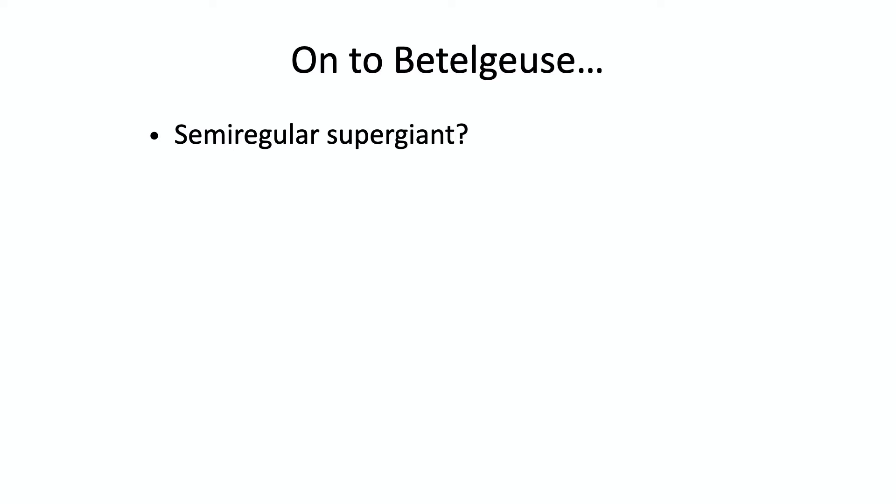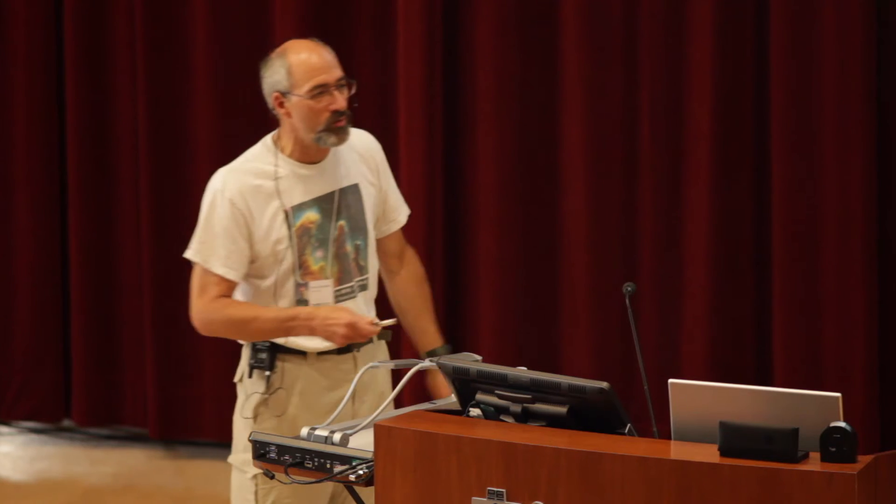Moving on to Betelgeuse: it's known as a semi-regular supergiant. Supergiants are interesting by themselves — they're gigantic stars. Paul's model from this morning, stretching out to approximately Saturn, represents approximately the distance Betelgeuse would occupy if it were where the sun is — it would extend somewhere between the orbits of Mars, Jupiter, or Saturn. It's 30 solar masses and about 600 light years distant. When we see it described as semi-regular, we ought to be cautious about looking for one simple period to explain it. As David Turner's poster outside noted, the challenge is to find a reliable period.